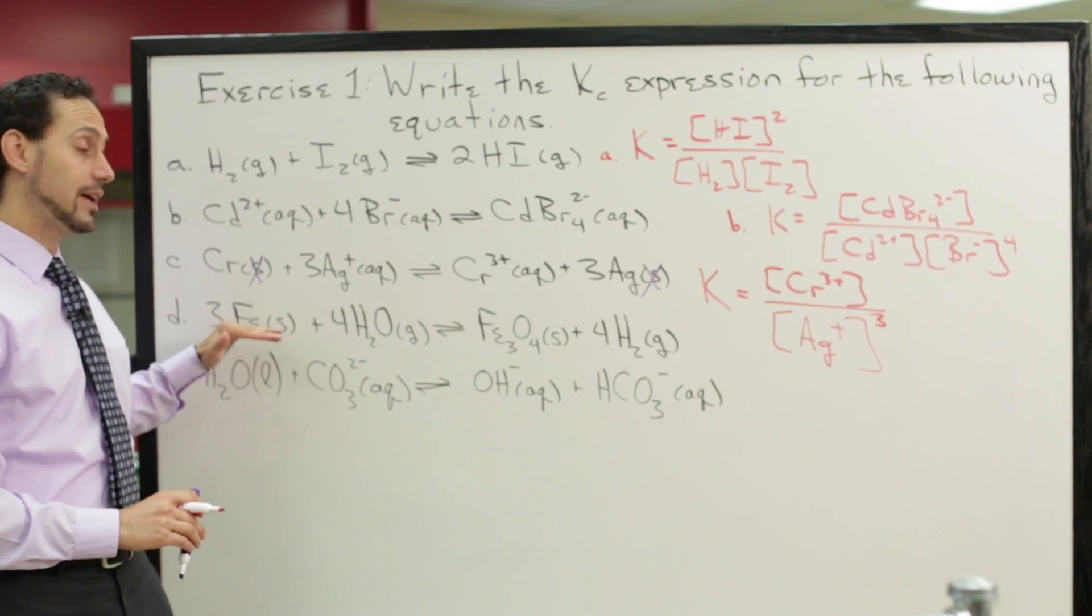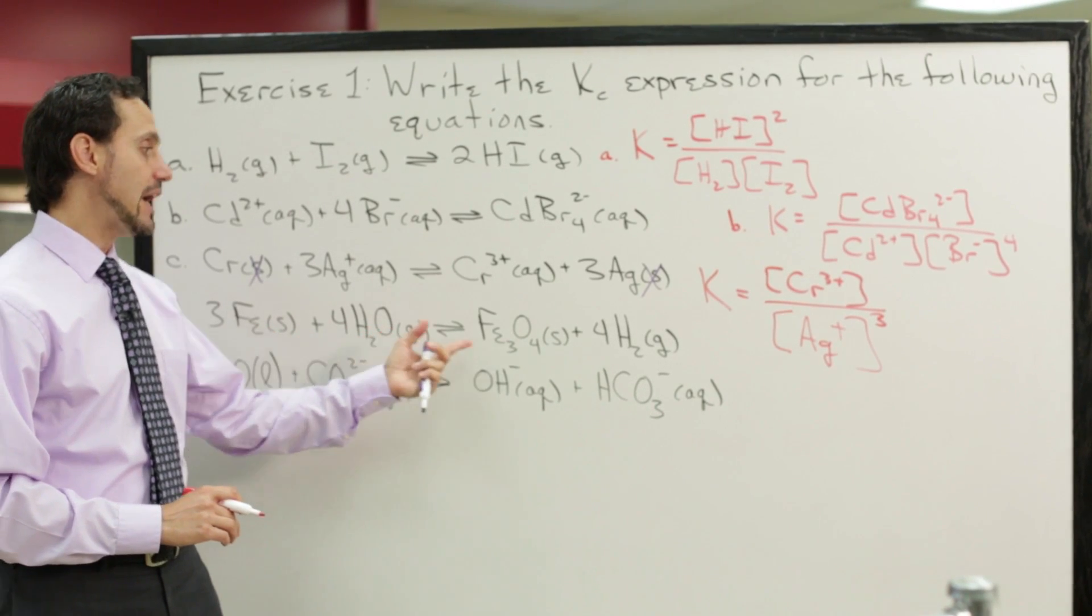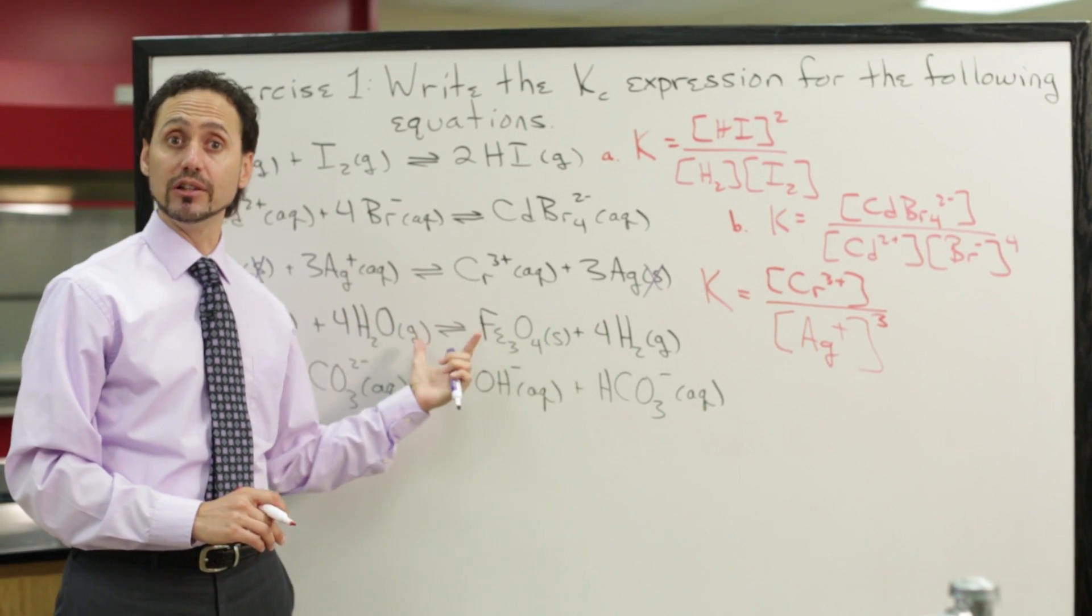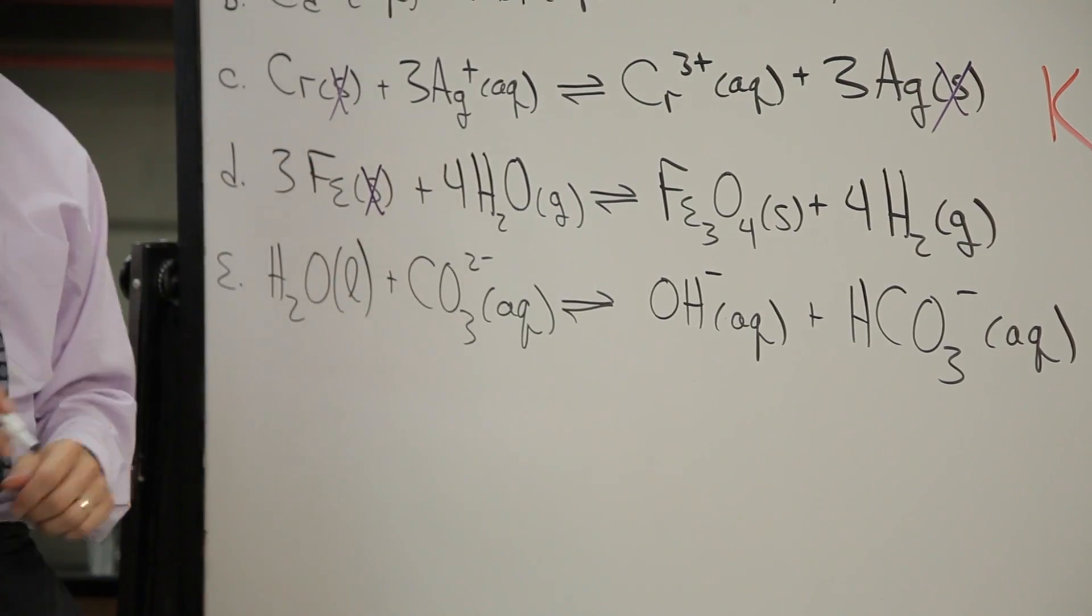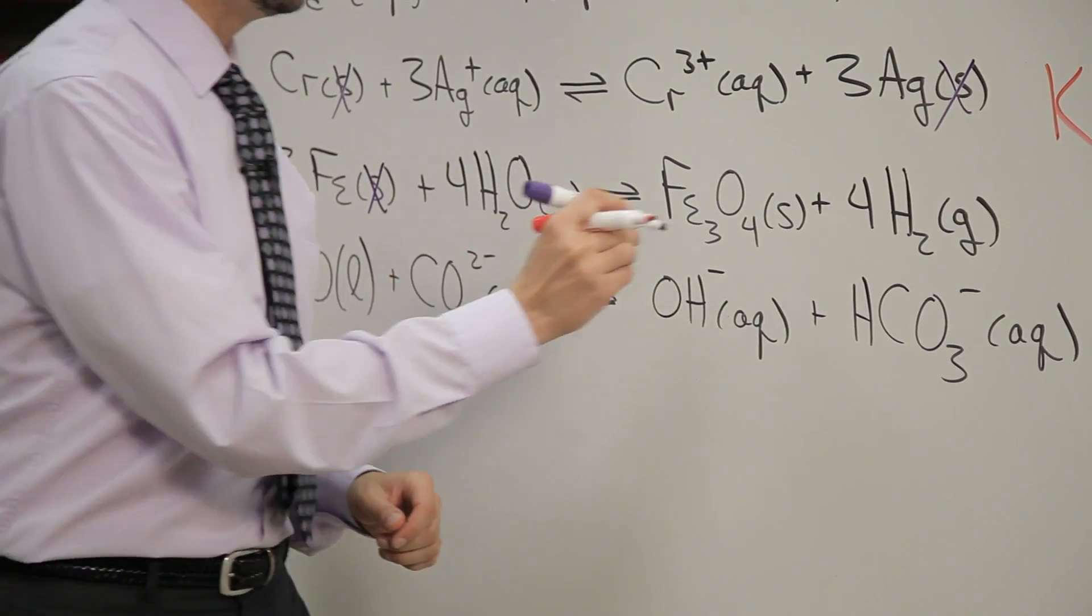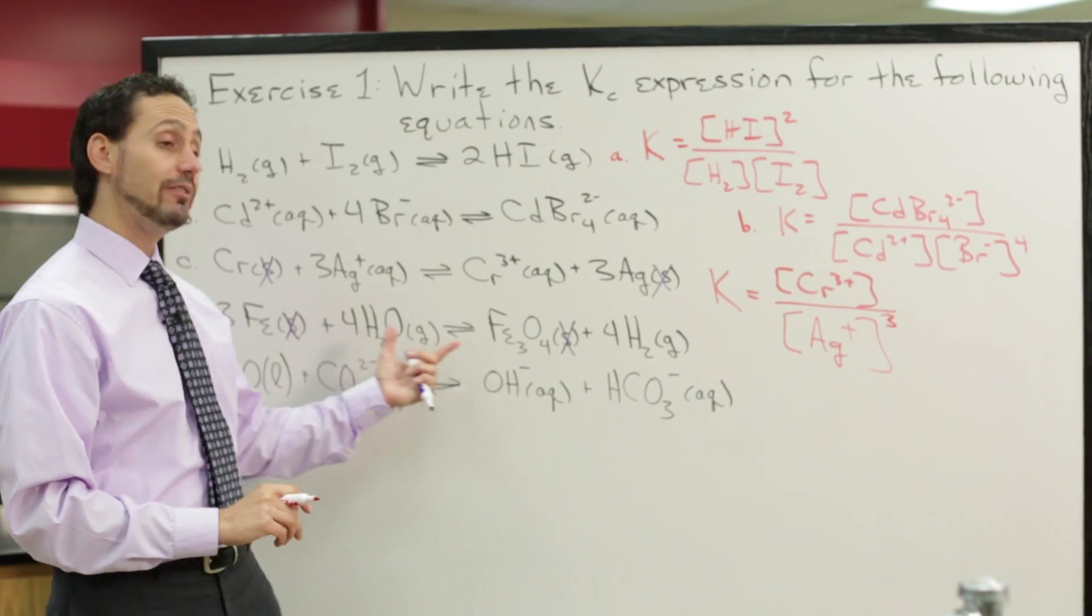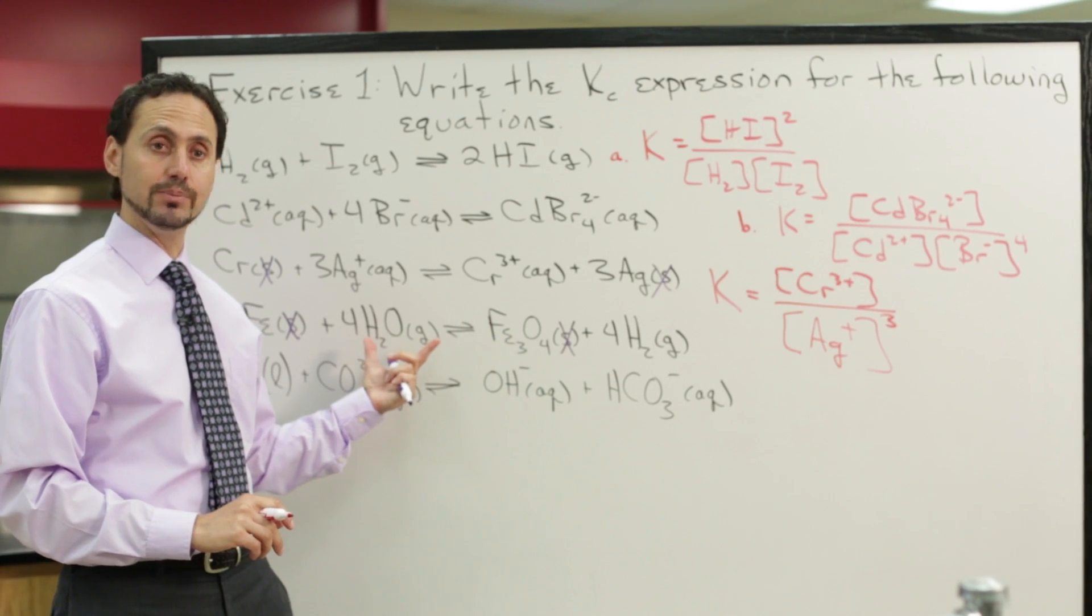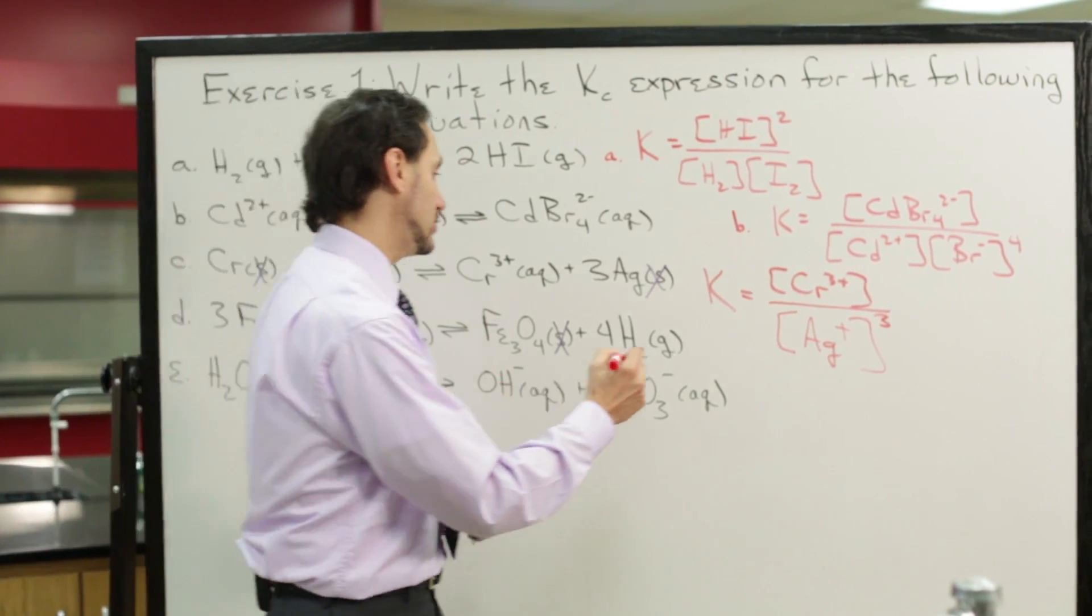For letter D, again, it'll work very similar. The only thing we have to take into account is that we also have two solids in this equation. We have iron on the reactant side and solid iron oxide on the product side. So once we've eliminated those two compounds, what do we have left for the equilibrium constant expression?